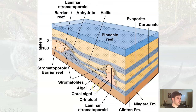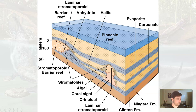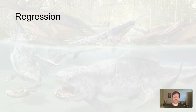This is a cross-section of Michigan at the time, showing the series of sedimentary rocks — the limestones and some of the other evaporites that were laid down.